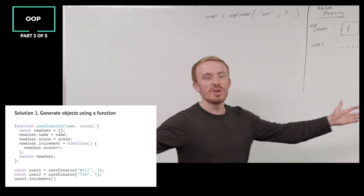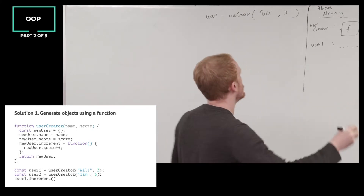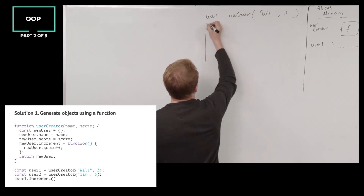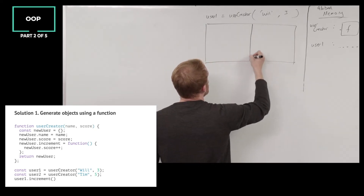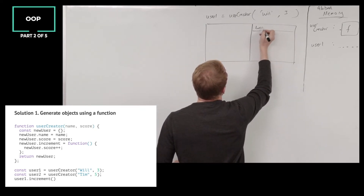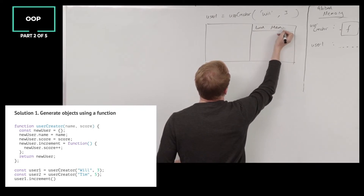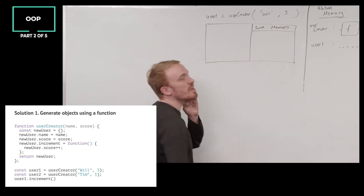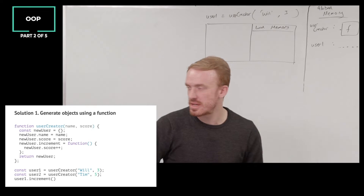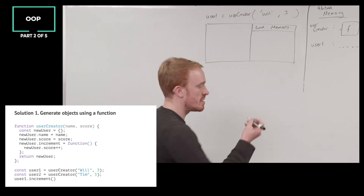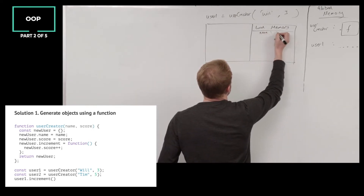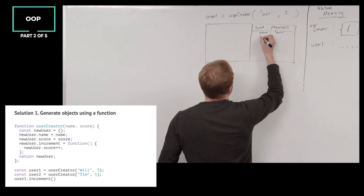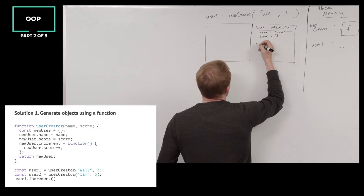Create a new execution context. And in we go. What's the first thing we do inside this execution context? We have a parameter name and we're going to assign the variable will - the argument will. And then we have the parameter score, and it's going to be the argument 3.